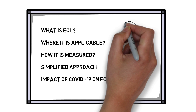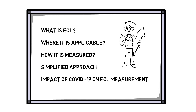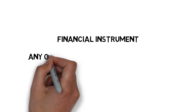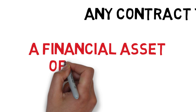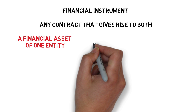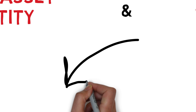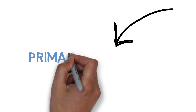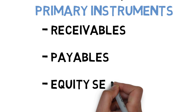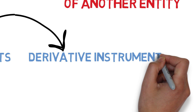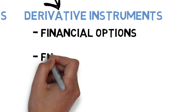Before diving in, let us discuss certain concepts which will help us to better understand ECL. A financial instrument is any contract that gives rise to both a financial asset of one entity and a financial liability of another entity. These financial instruments include primary instruments, which cover receivables, payables and equity activities, and derivative instruments, which cover financial options, futures, forwards, and swaps.